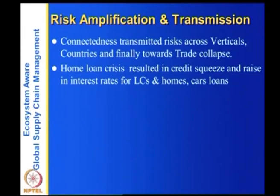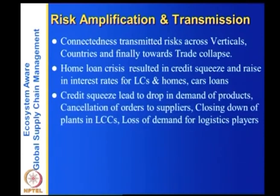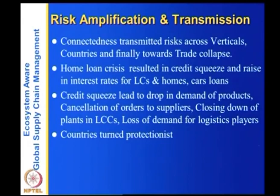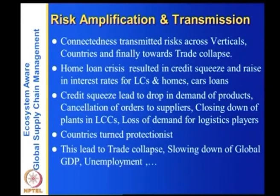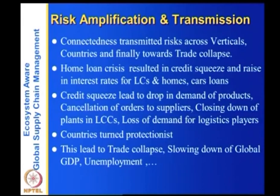The home loan crisis resulted in credit squeeze and raised interest rates. Credit squeeze leads to drop in demand, cancellation of orders to suppliers, closing of plants in low-cost countries, and loss of demand for logistics players. Countries turn protectionist, leading to trade collapse, slowing of globalization, falling GDP, and unemployment. Recent articles from 2009 to 2011 blame global supply chains and their risk amplification and transmission through connectedness for the global trade collapse.